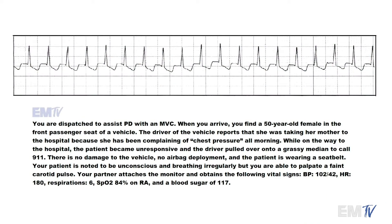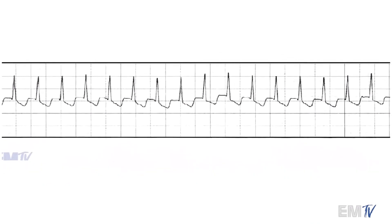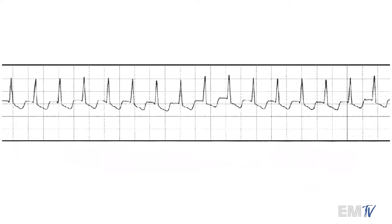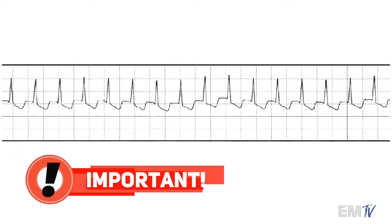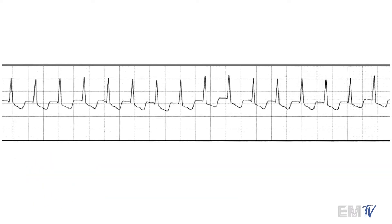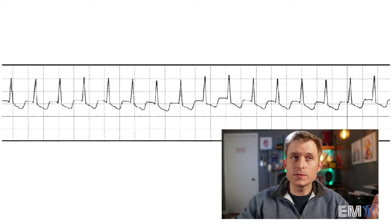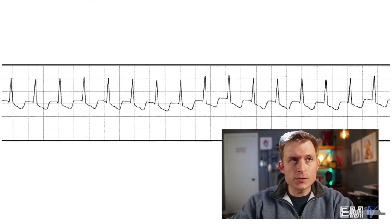So this rhythm is going pretty fast. Did you guys get it right? Let's take a look at it more closely. The rate this rhythm is going at is around 180 BPM. I know some of you have been taught that anything over 140 BPM is by default SVT. This is a very wrong way of thinking about things — there are other rhythms that can go at an excess of 140 BPM easily. It's not just SVT.